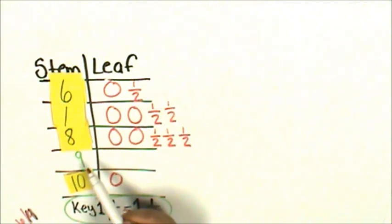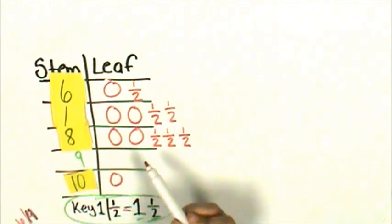For stem 9, we don't put a 0 for the leaf, because that would mean one of the girls has a shoe size of 9. And in our original list, one of the girls did not have a size 9 or size 9.5 shoe size.